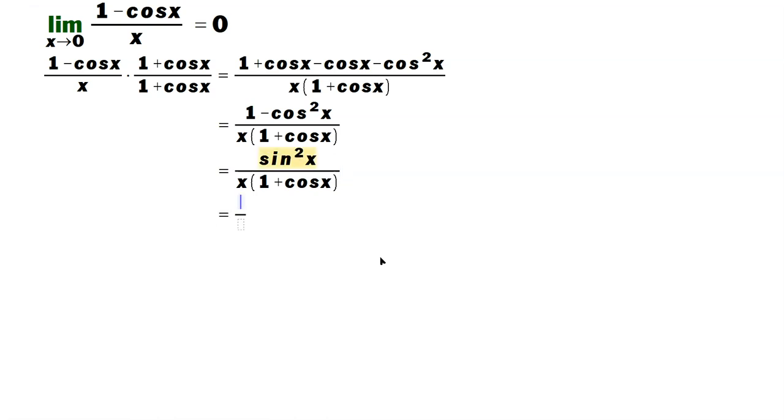And then you just separate this into the following: sine x over x, and then another sine x divided by 1 plus cosine x, and then you can recreate your limit as follows.